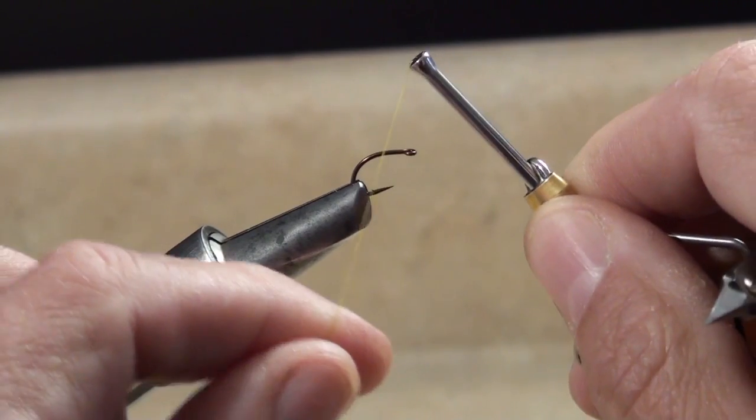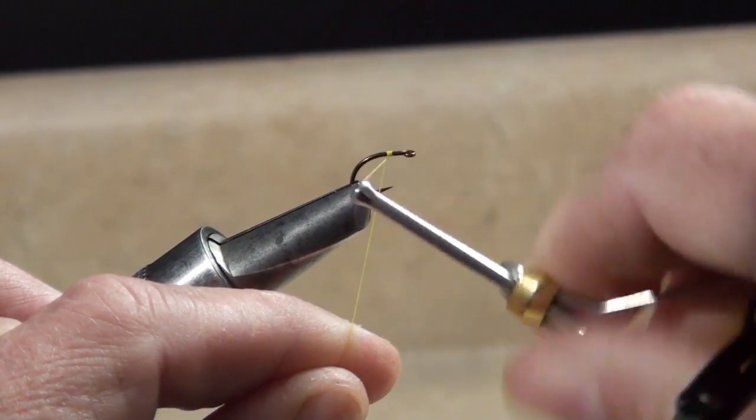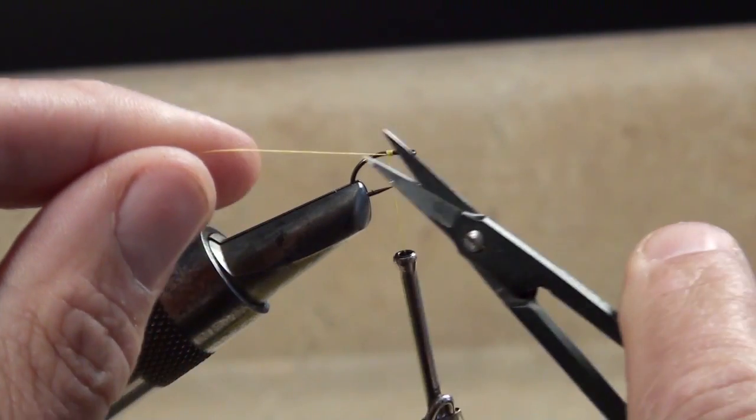The simplest way to start thread on a hook is to lay the thread across the hook shank at an angle and then wrap over the tag end of the thread.